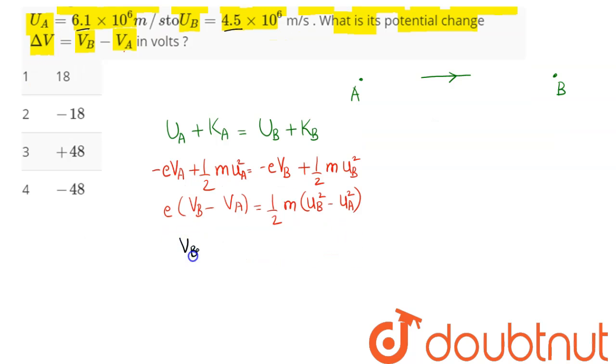So we can say here, Vb - Va, which is the required potential difference, comes as m/(2e) × (ub² - ua²).